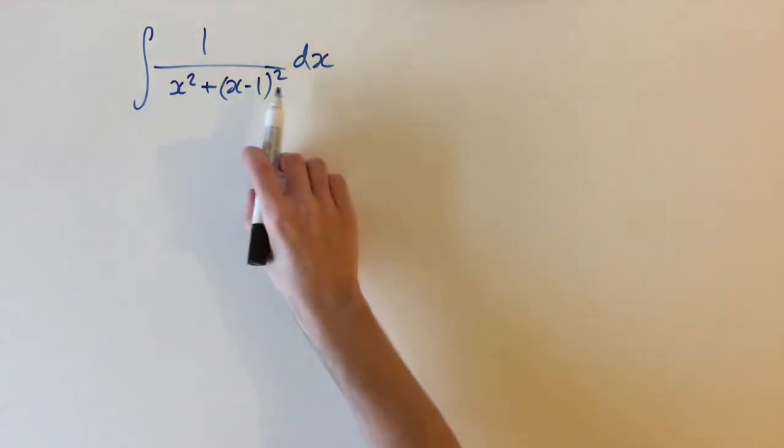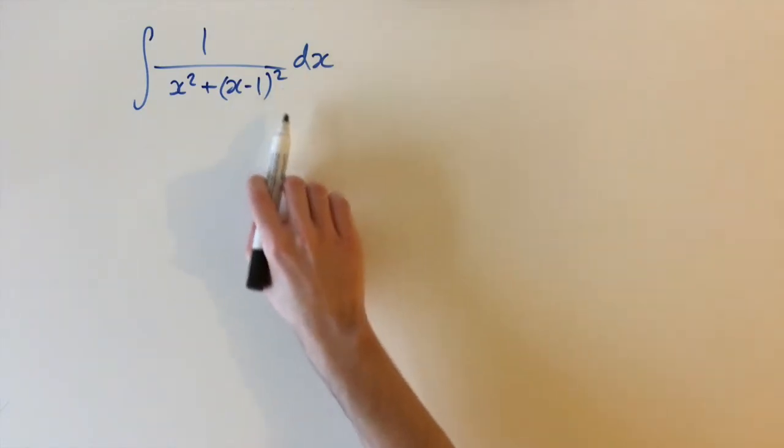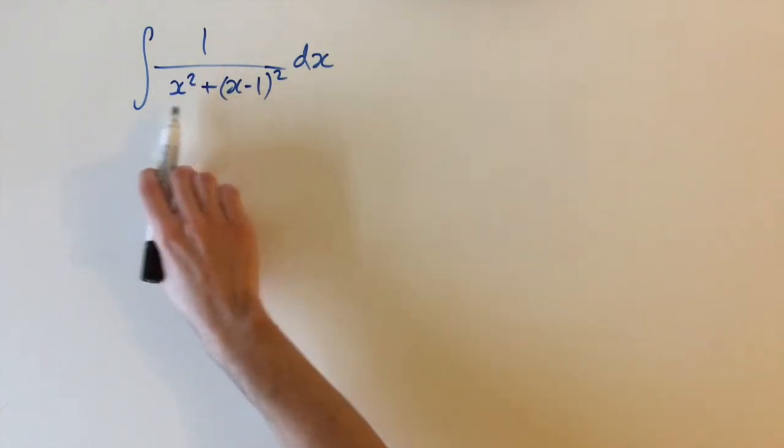Welcome back. Today we're looking at the integral of 1 over x squared plus x minus 1 squared dx. This is essentially the reciprocal of a quadratic function.